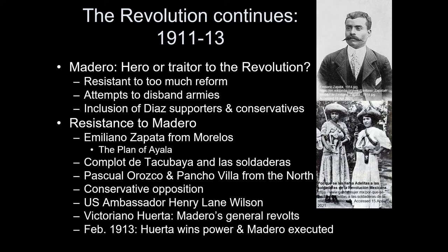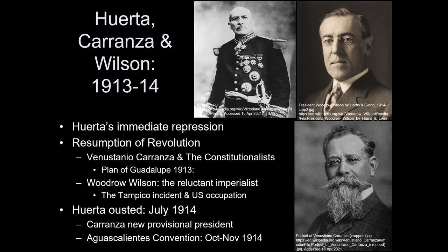Huerta, when he became the new leader of Mexico, became very reactionary — going right back to the way things were under Diaz. Strong military control over many parts of Mexico. Many who had once supported him now turned into his enemies. He almost had Pancho Villa executed — even though at one moment they had fought together against Diaz. By 1913, many in Mexico looked around and said: three years of fighting, and we are right back to the way things were — just a different man in charge. They had simply replaced Diaz with Huerta. So the revolution resumed once again.